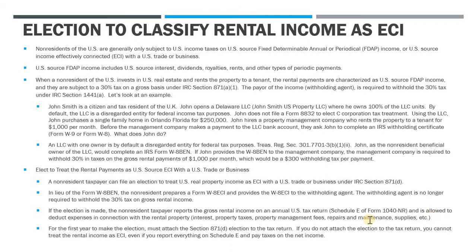The election is made in the very first year that you have gross rental income you want to treat as ECI. Once the election is made, you don't have to file it every single year, but the election remains in effect until you revoke it — and to revoke it, you have to request permission from the IRS. The first year you make the election, you have to attach an 871D election statement. If you don't, you can't treat the rental income as ECI. Even if John prepared the 1040NR with Schedule E, reported all income and expenses, if he did not include that election statement attached to the 1040NR, it's not ECI — he has to report it as U.S. source FDAP income and pay tax on a gross basis.